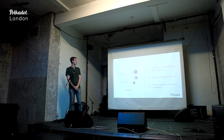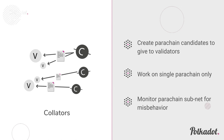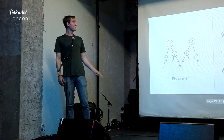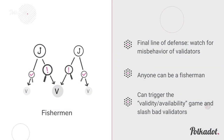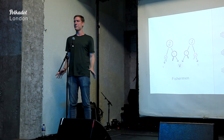We also have collators and fishermen. Collators create parachain candidates and give them to validators. Validators run them through the consensus process and decide if they're good. A collator works on only a single parachain because that's already a heavy enough job. They also run a full node on the parachain to monitor for misbehavior — if they see that validators included a bad parachain block, they issue an on-chain report and cause a dispute. Fishermen do that same thing without being collators. These roles are fairly flexible — you don't go into some registry to become one; you just spin up a node and declare what you want to be. It will be completely open and permissionless.